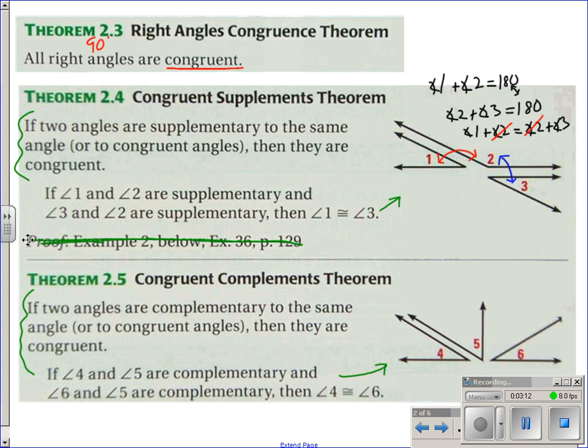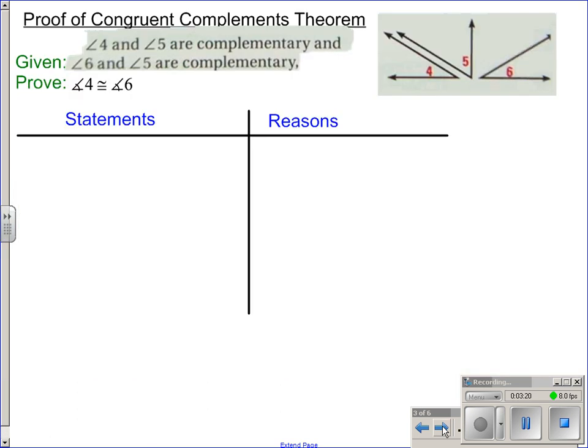Theorem 2.5 basically says the same thing, except for now with complementary angles. Complementary angles add to 180. So, we're going to do that proof right here. It's a two-column proof.